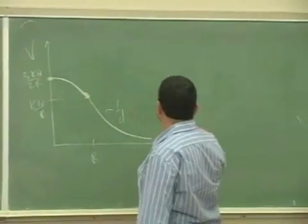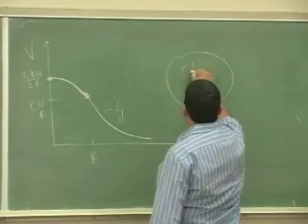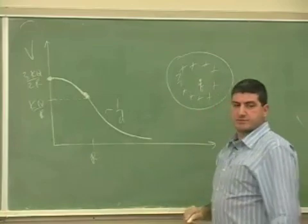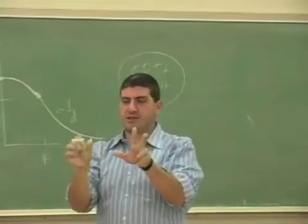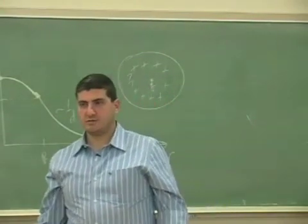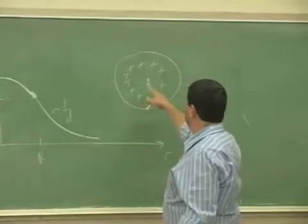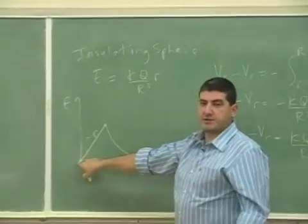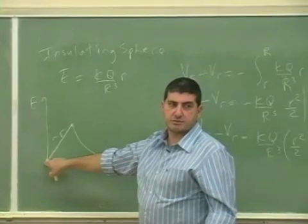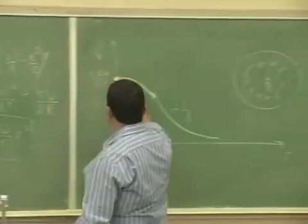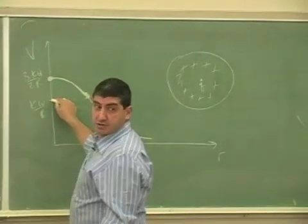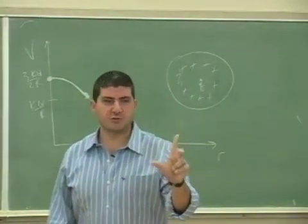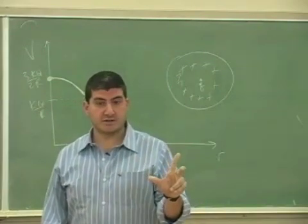Here's the interesting thing: if you take an insulating sphere with charge distributed throughout and place a small charge little q at the center, what happens? Go to the electric field graph — the electric field at the center is zero. The potential there is one and a half times the potential at the surface. So if you put the charge exactly at the center, it's in a state of non-stable equilibrium — there's no force on it because the electric field is zero.